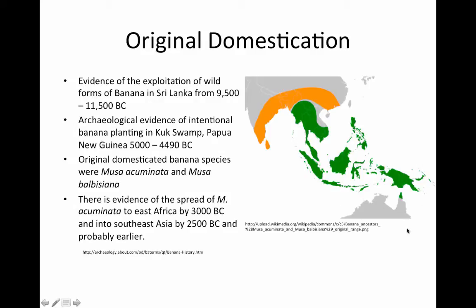These original domesticated species were the Musa acuminata, with its range shown in green, and the Musa balbisiana, with its range shown in orange. There is evidence of the spread of the acuminata variety to East Africa by 3,000 B.C.